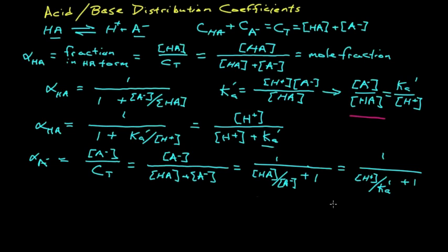Rearranging to remove the fraction from the denominator, we have that the alpha value or fraction in the conjugate base form is KA prime over H plus plus KA prime. So all we've done is multiply everything, the numerator and the denominator by KA prime. And we come to this equation, which is similar to the one we had before.